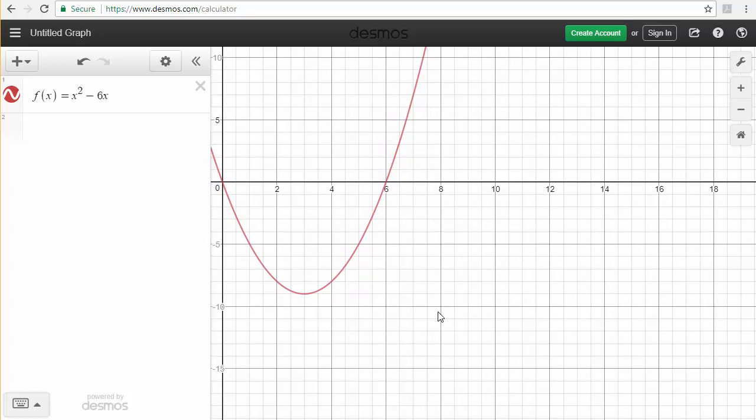Now one of the nice things about Desmos is not only can you do functions of x, you can do functions of anything. You could even write y equals x squared minus 6x, that would work. I'm going to get rid of what we just did—I'm going to click the x here—and then I'm going to go ahead and type in some function.